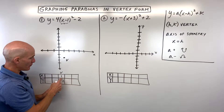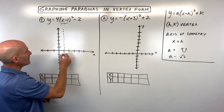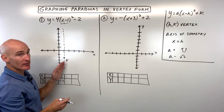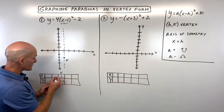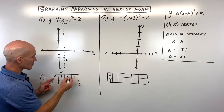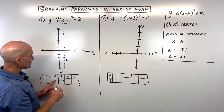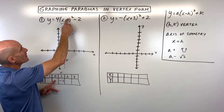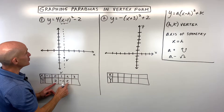I like to make a table and put the vertex in the middle, because the parabola is symmetric about the vertex and about the line of symmetry that goes through the x-coordinate. So if we pick some points on either side — 0 and 2 — let's plug in 0. 0 minus 1 is negative 1. Negative 1 squared is 1. Times 4 is 4. Minus 2 is 2. So x equals 2 would also give y equals 2, since it's symmetric.